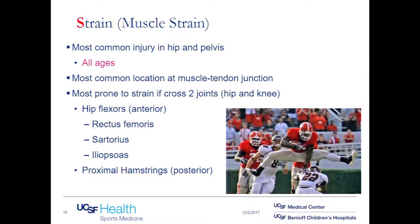Starting with S for strains — probably the most common thing people will have. A strain means it's a muscle strain, not necessarily a cartilage or ligament injury, and this can occur in all ages from kids to adults. Usually when they strain a muscle, it's where the muscle turns into tendon. The muscles in the hip area most likely to get injured are those that cross two joints — the hip and the knee.